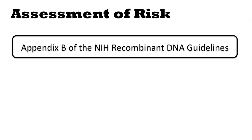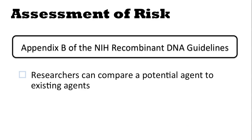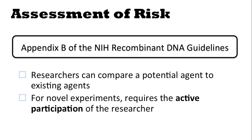So how would you assess risk? By going to Appendix B of the NIH recombinant DNA guidelines, researchers can compare a potential agent they're planning to create in the lab to existing agents. For novel experiments, this requires the active participation of the researcher — it's not as if you're simply going to create your potential agent and run it through tests to determine the risk group; that would be unsafe. You need to consider the likely risk group for a potential agent using Appendix B as a guide, especially when producing an organism that's never existed before.